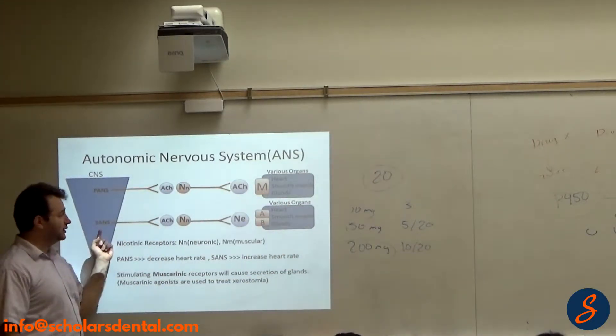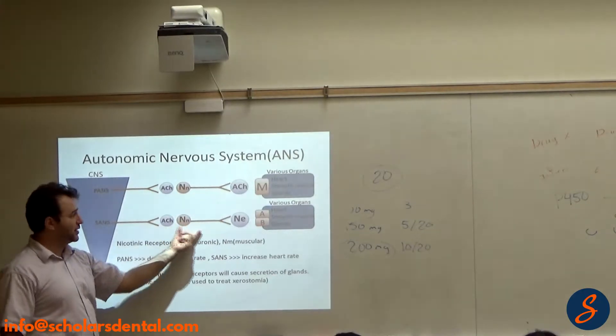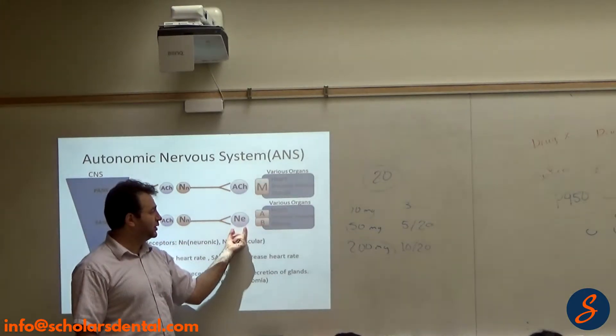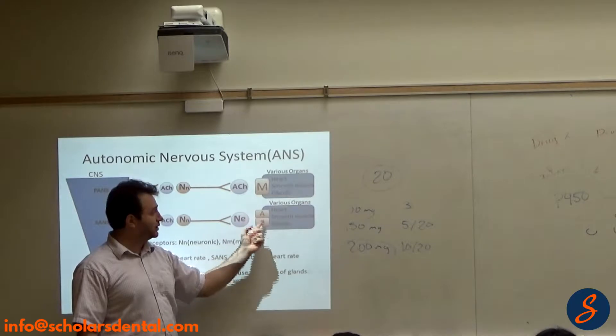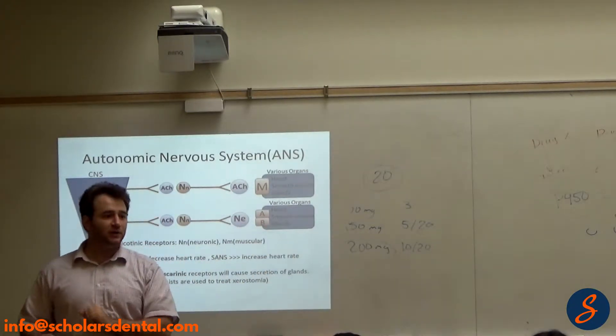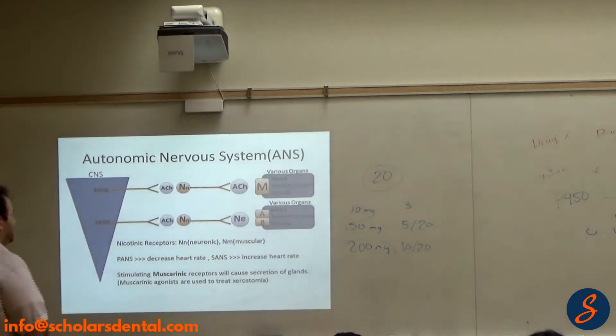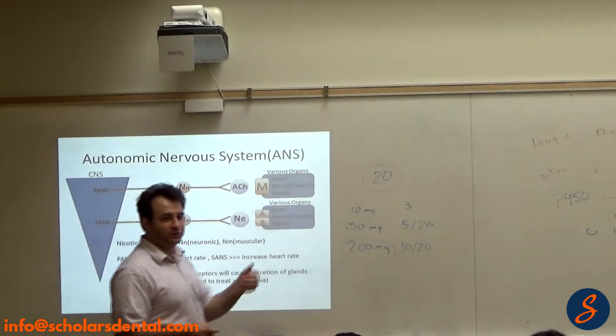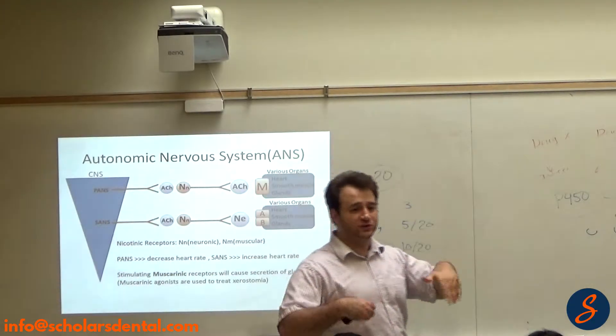If the sympathetic is working, it's going to go through this process, and then at the end, it's going to release norepinephrine and stimulate one of these on the gland, and then it's not going to secrete. We said all glands in the body, which receptor do they have? Mainly that controls their stimulation?